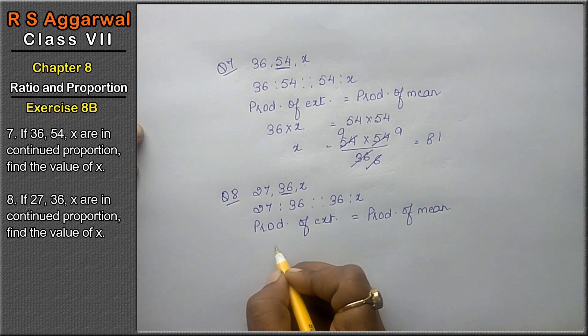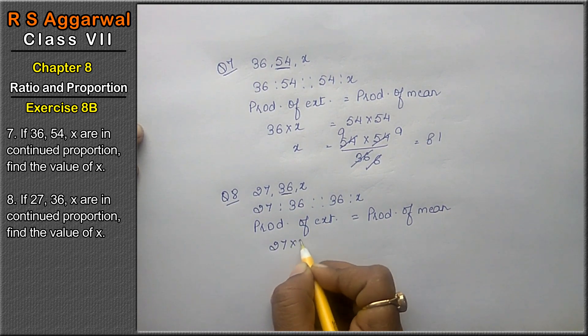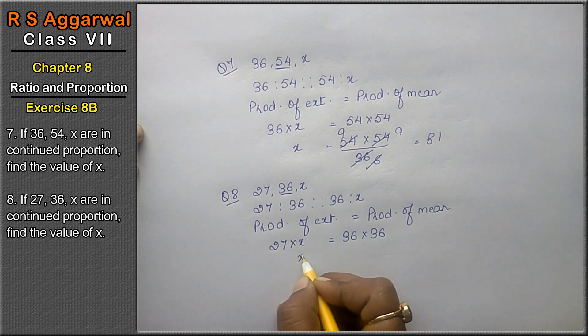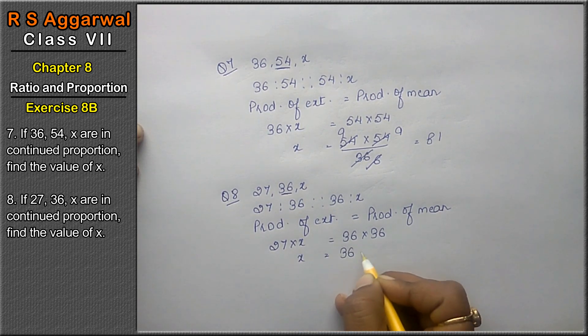Product of extremes: 27 into x. Product of means: 36 into 36. Now x equals 36 into 36 upon 27.